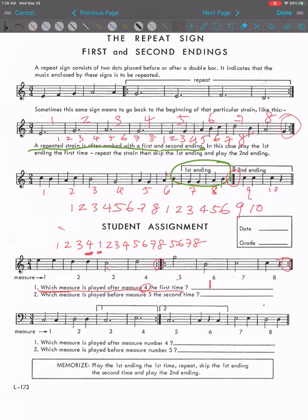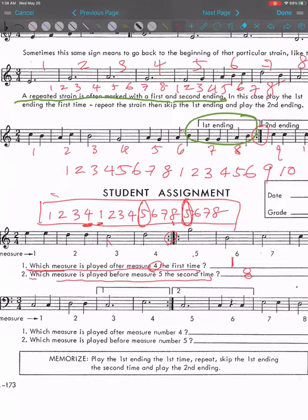Now second question: which measure is played before measure 5 the second time? So if you look at this sequence, the second time that measure 5 is played is right here, because this is the first time, this is the second time. So which measure is played before measure 5 the second time will be number 8, measure 8. See, it's much easier if you write out the order.